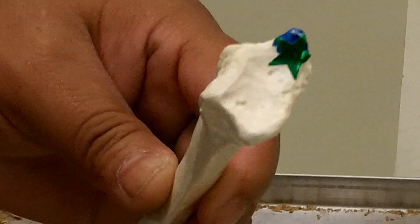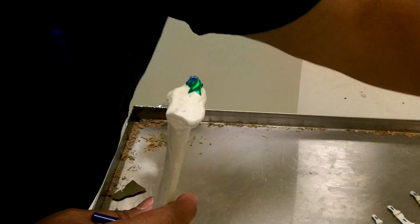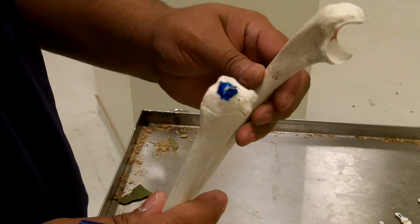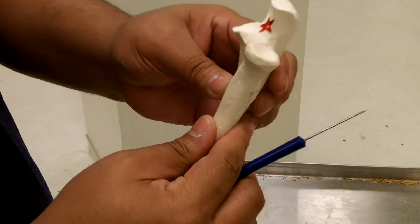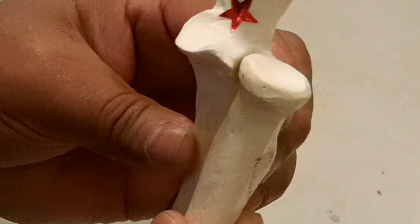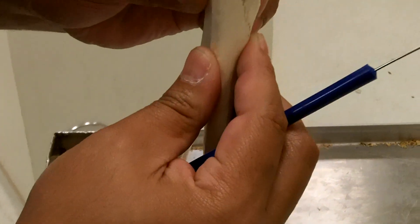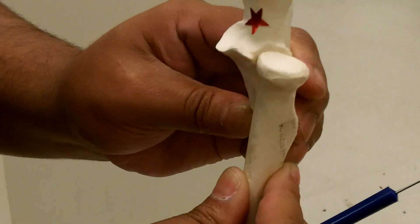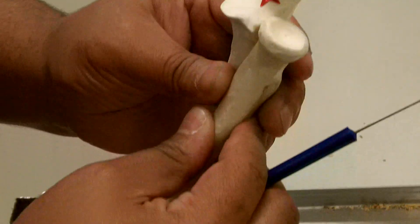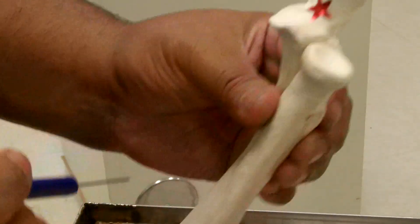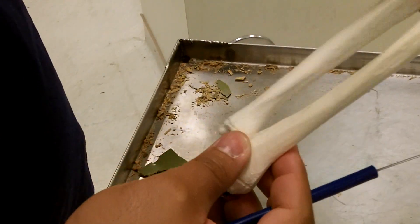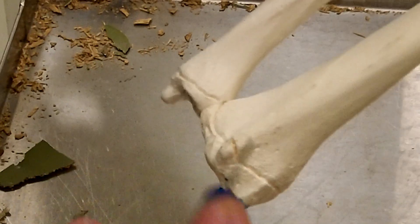When the ulnar and radial bones join together, they form what are called the radioulnar joints. The one up here is going to be the proximal, where these two join together. This would be the proximal and the one down here would be the distal.